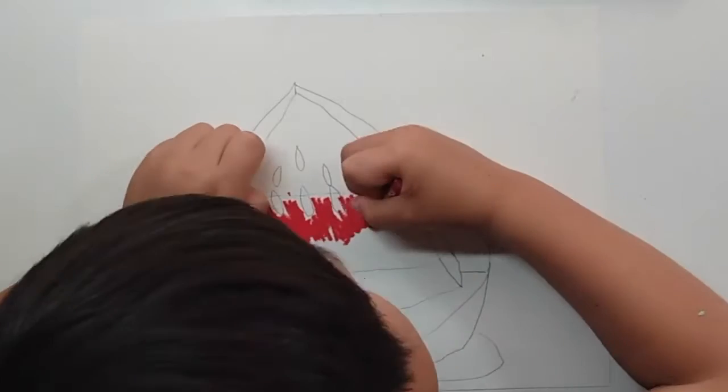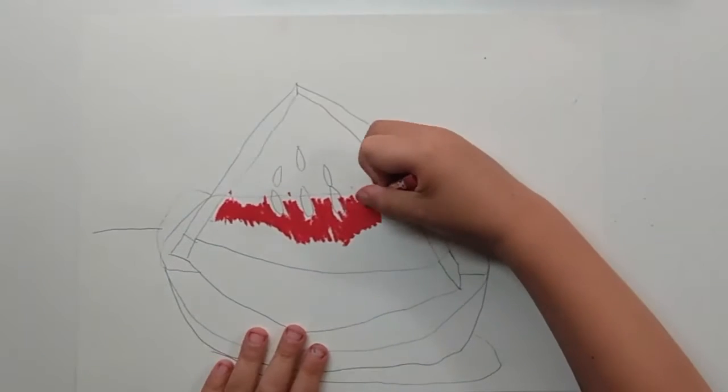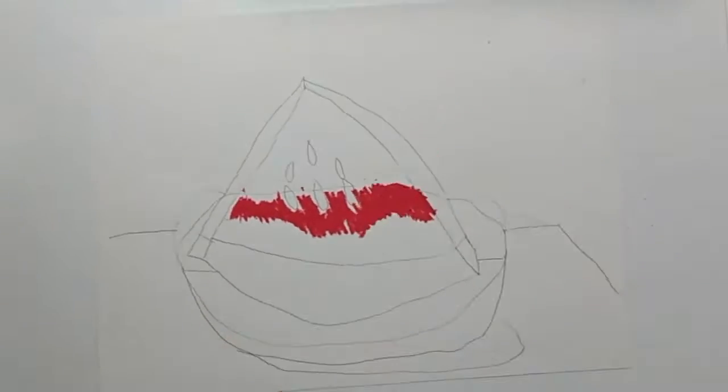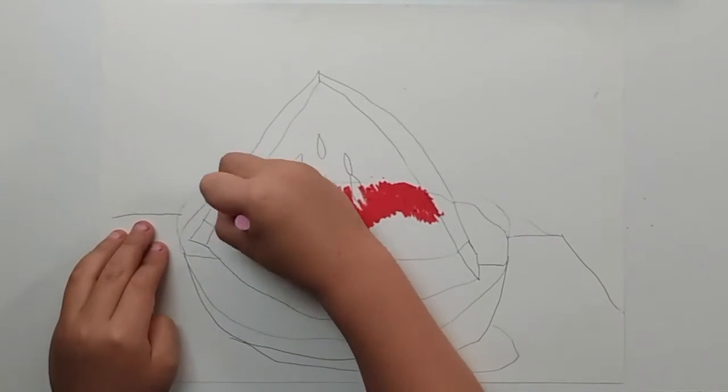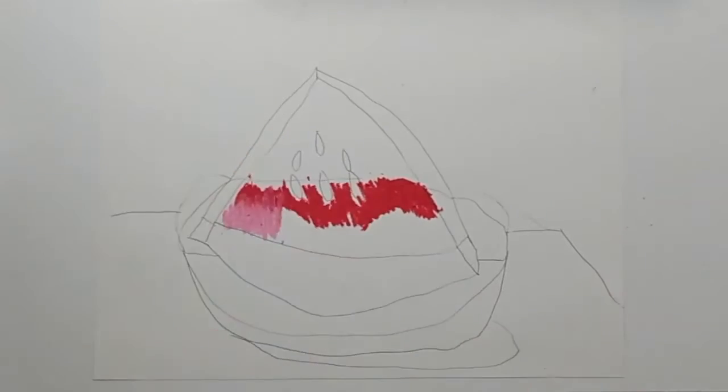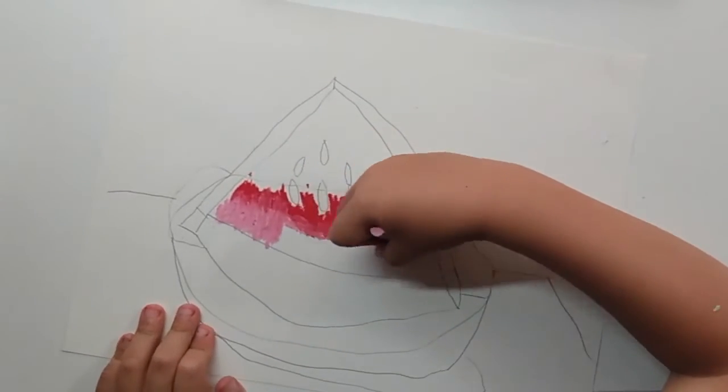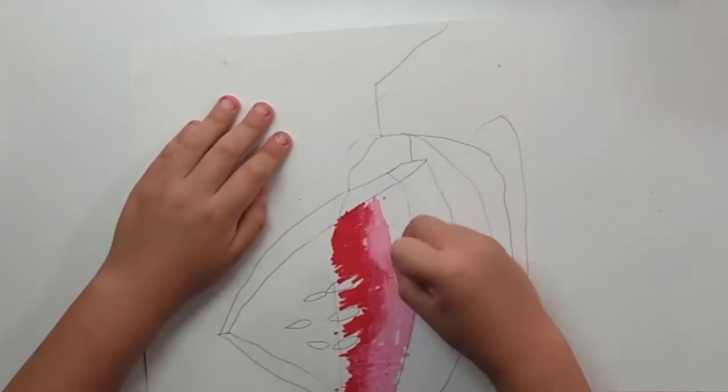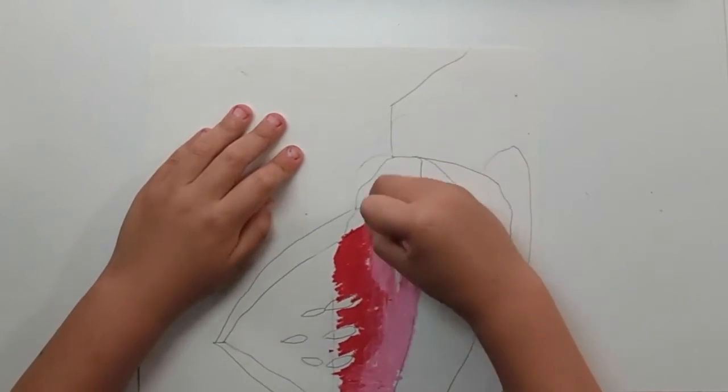Asher is starting with a red oil pastel. Now he's using a pink oil pastel to color in the light parts of the watermelon. Don't forget to blend it in. That was good advice. Thanks Asher.